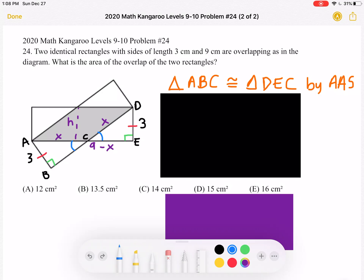Secondly, we know that angle CBA, drawn over here in green, and angle DEC, drawn over here in green as well, must also be congruent because they're both right angles.